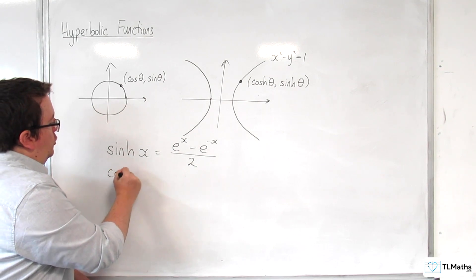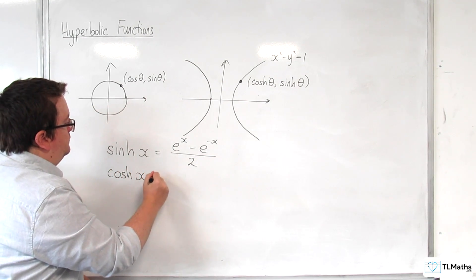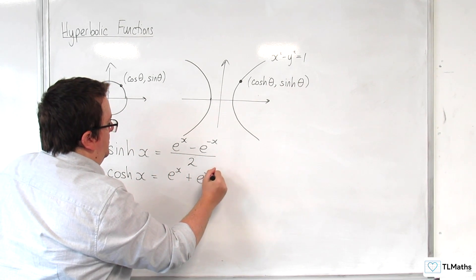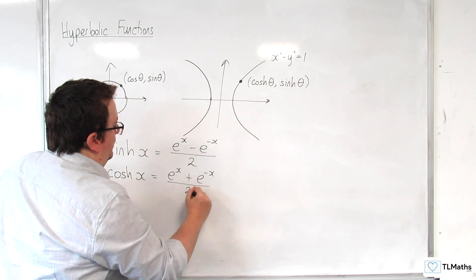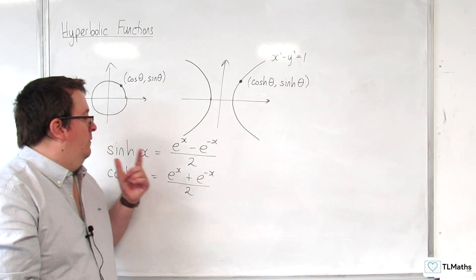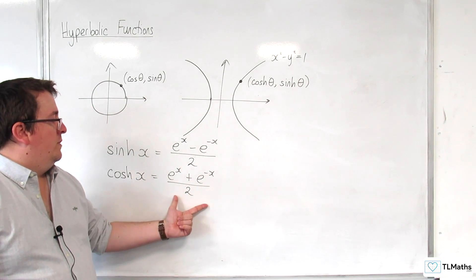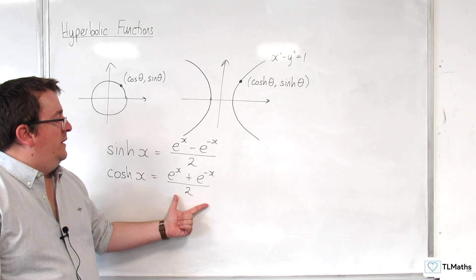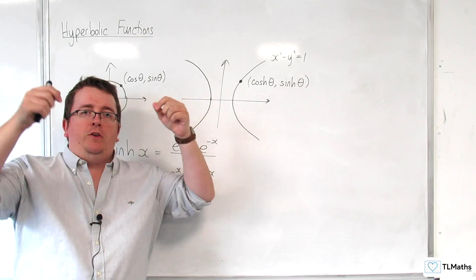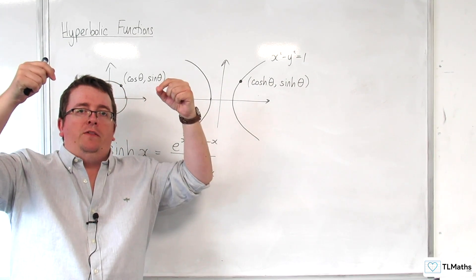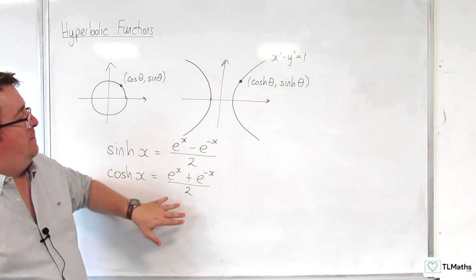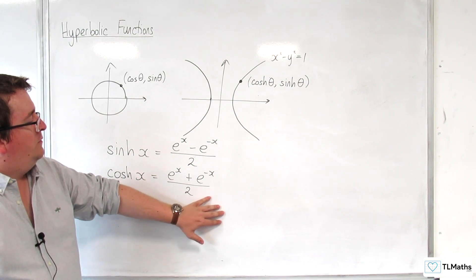Then we have cosh of x, and that is e to the x plus e to the minus x over 2. Now, this is related to a catenary. So, that is where you've got, like, a chain link. So, if you hold up a chain, the shape that it makes, it's not a parabola, it's very close to one, but it's actually defined this way.